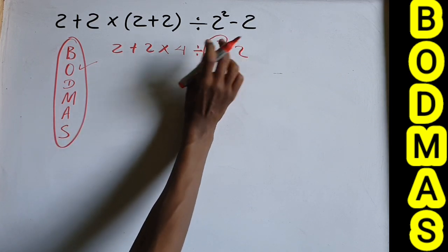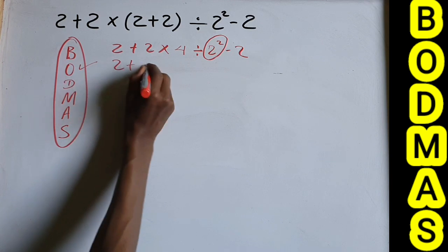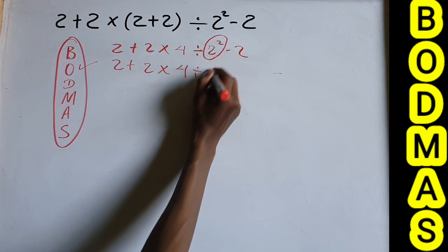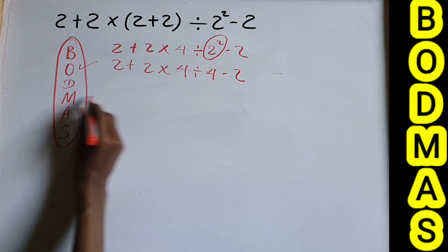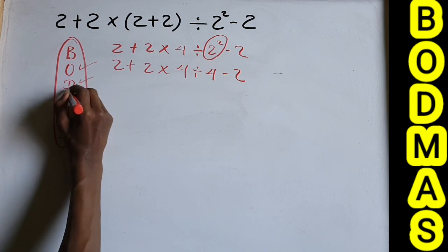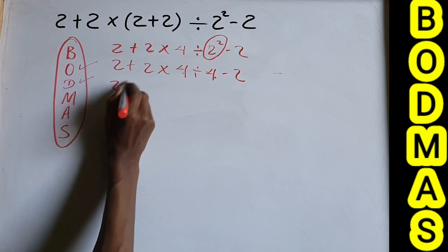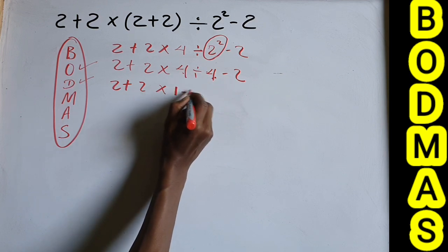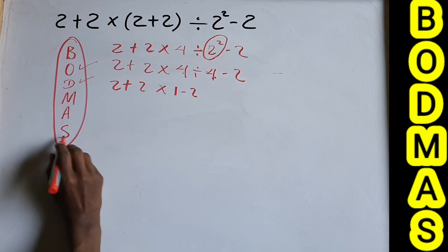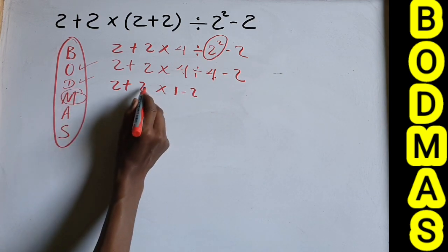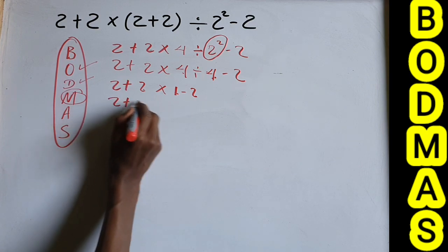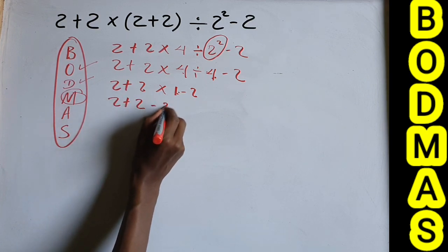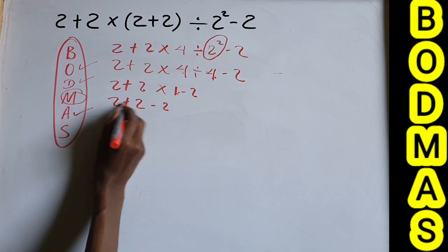We simplify the order part: 2² equals 4. So the expression becomes 2 + 2 × 4 ÷ 4 − 2. For Division: 4 ÷ 4 equals 1. Then Multiplication: 2 × 1 equals 2. The expression is now 2 + 2 − 2.